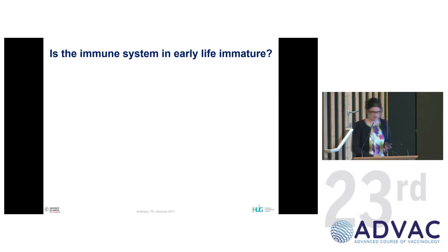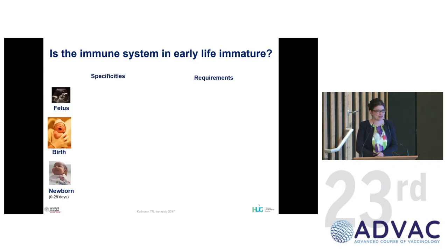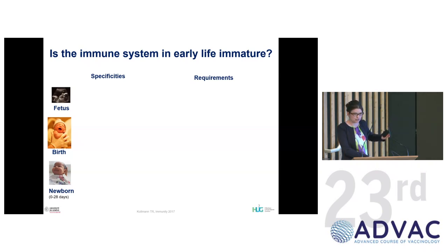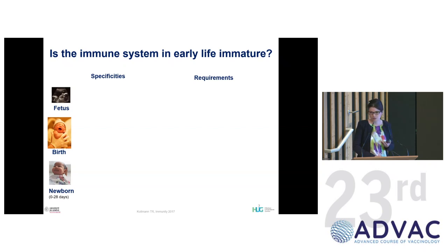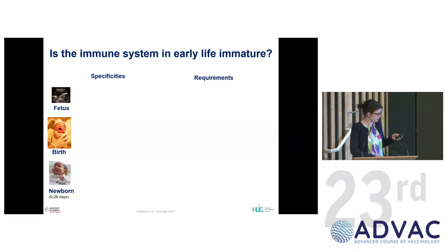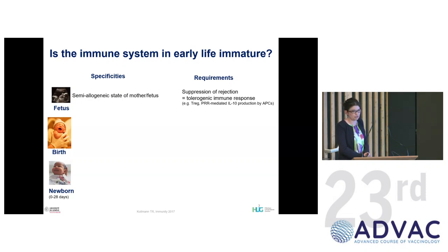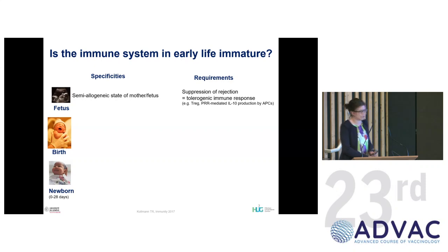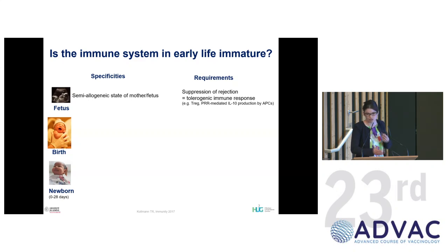What I'm going to show you now is that at different stages of early life, the baby or fetus faces different environments and different immunological requirements. At the very early fetal stage, there is a semi-allogeneic relationship between the mother and the fetus, and the fetus has to do everything not to get rejected by the mother. The immune system has to suppress rejection and induce tolerogenic immune responses — for example, regulatory T cells.